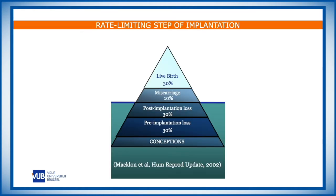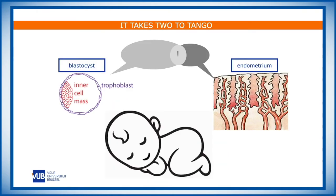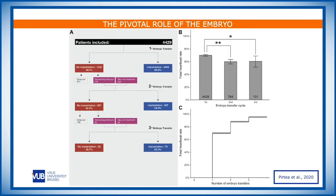When we look at this graph, we see that implantation is the rate-limiting step in ART today. You can see that just prior to or just post-implantation, about 60% of the embryos are lost. If we want implantation to occur, there are two players. One is the blastocyst, which we want to be of optimal quality. And the second player is the endometrium. These two need to interact with each other in order to provide an implantation which can then continue until a live birth.